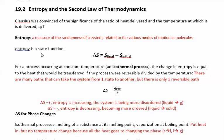Entropy is a state function, meaning it's pathway independent — it depends on the current state of your system. When looking at the change in entropy, delta S means final minus initial. In a chemical reaction, your final state is your products and your initial state is your reactants. So you compare the entropy of products minus reactants. If delta S is positive, entropy is increasing; if it's negative, entropy is decreasing.